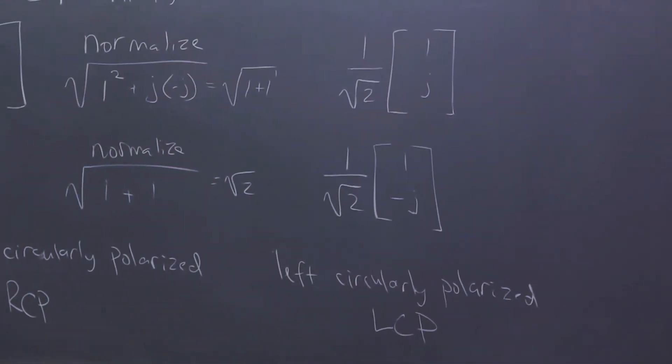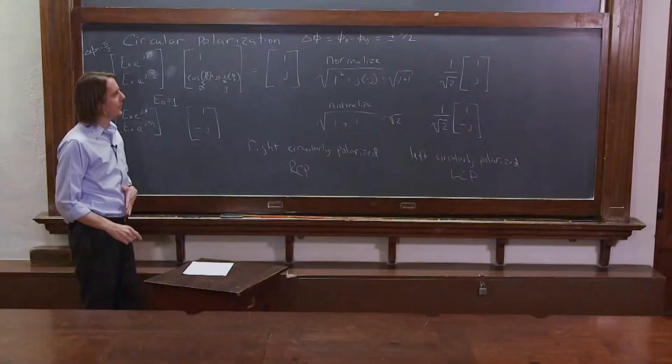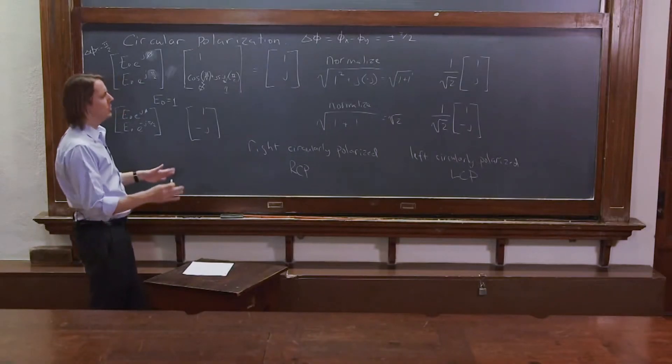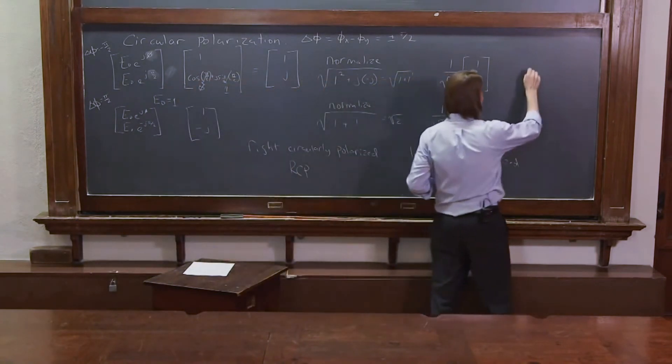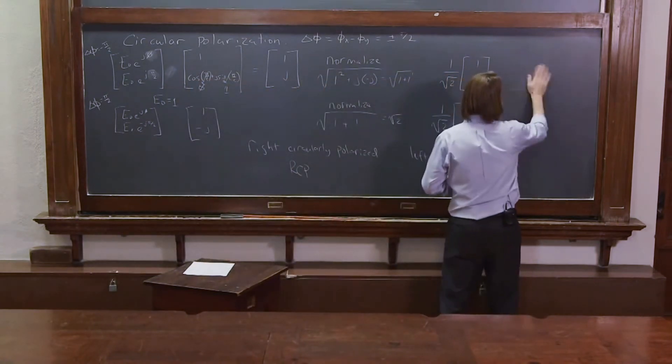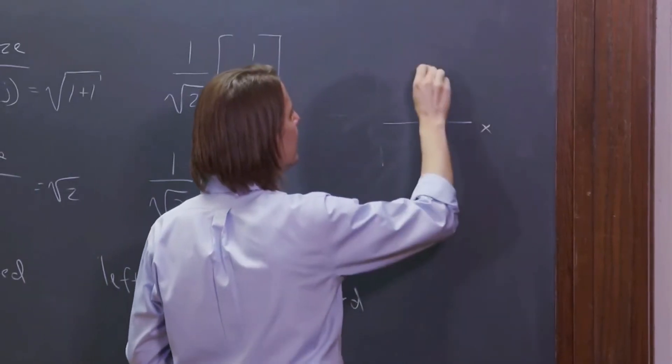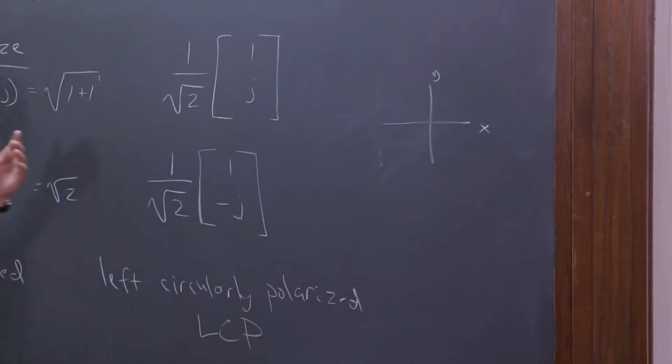So these are the two states of light, one is RCP and one is LCP. Let's see if we can figure out which is which just by thinking about it. So we have them like this, and we have a little room like that, and here we have x, and here we have y.